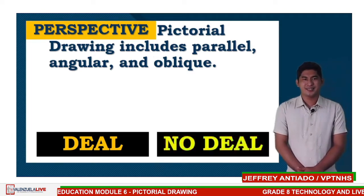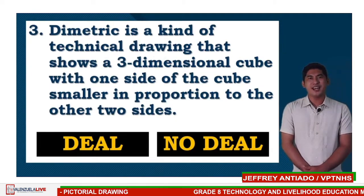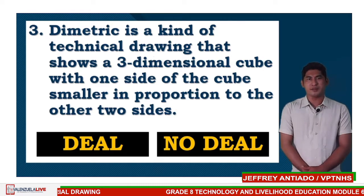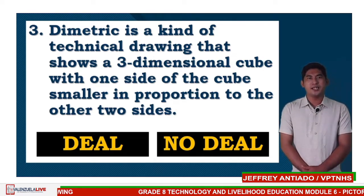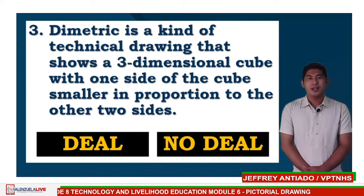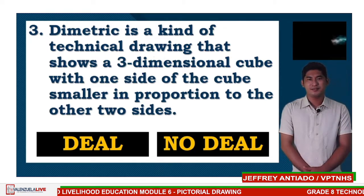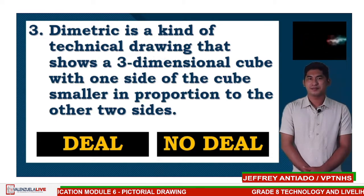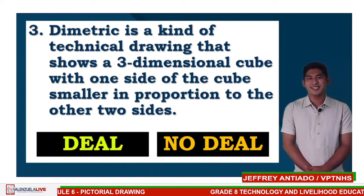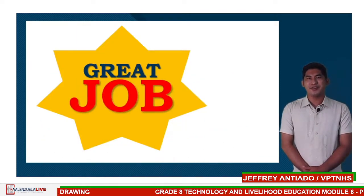Next, we have the third statement: Dimetric is a kind of technical drawing that shows a three-dimensional cube with one side of the cube smaller in proportion to the other two sides. Is it a deal or no deal? And the correct answer is, it's a deal. Great job, Grade 8 learners!